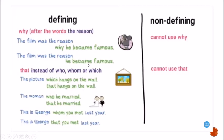'That' is a relative pronoun we can use instead of 'who,' 'whom,' or 'which.' So we can say 'the picture which hangs on the wall' or 'the picture that hangs on the wall' — the meaning is the same. Another example: 'The woman who he married' becomes 'the woman that he married,' and 'This is George whom you met last year' becomes 'This is George that you met last year.' Note that we cannot use 'why' or 'that' with non-defining relative clauses.